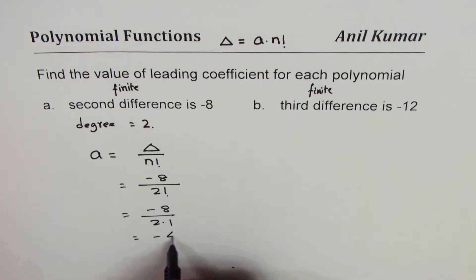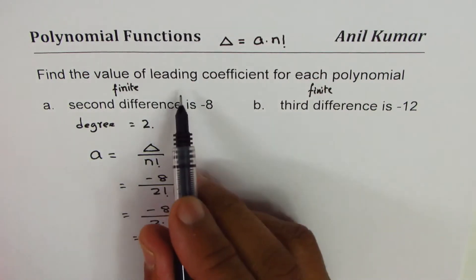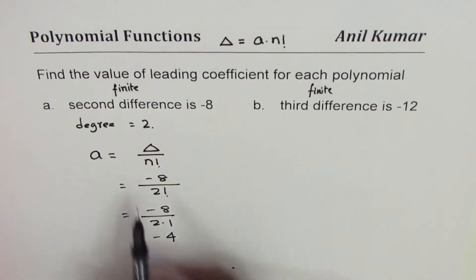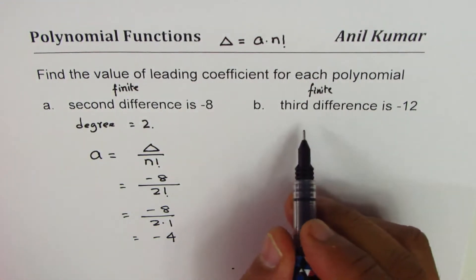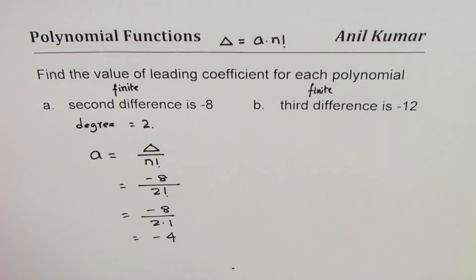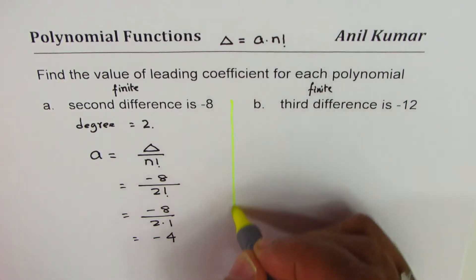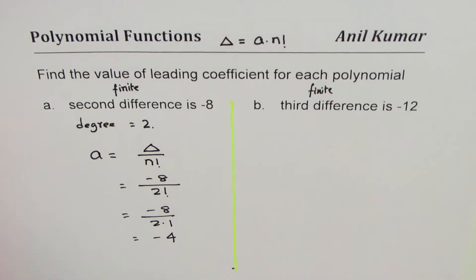And that gives us a value of -4. So the leading coefficient is -4 for part a. Let's do for the second one. You can actually pause the video, answer this question, and then check with my solution.